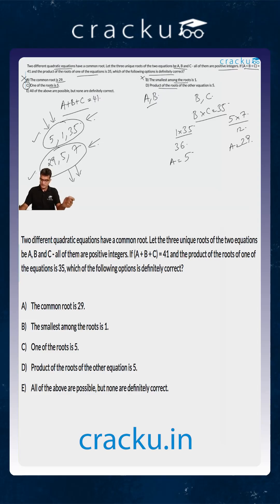Option D says the product of the roots of the other equation is 5. We can't say this for sure because the product of the roots in the second case will be either 35 or 145 or 29 times 7, which is 203. You can't say this for sure, so this is also not true.